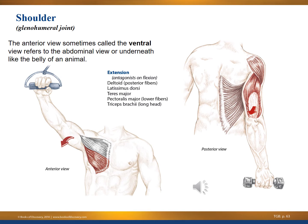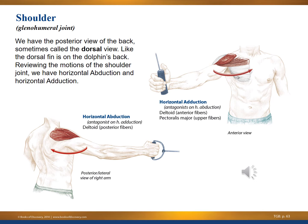As we move through the synergists of the shoulder joint, a few vocabulary terms: the anterior view is sometimes called the ventral view — ventral more typically refers to the abdominal or underside in animals. The posterior view is sometimes called the dorsal view, as in the dorsal fin on a dolphin's back. These terms come from navigating the body.